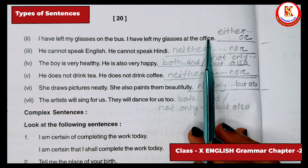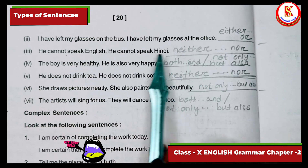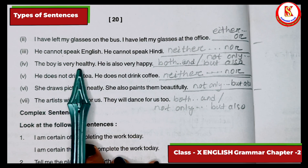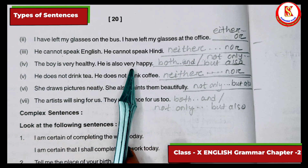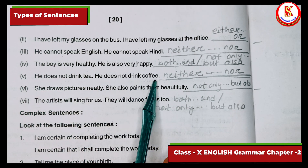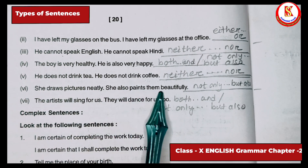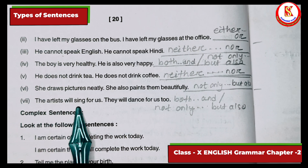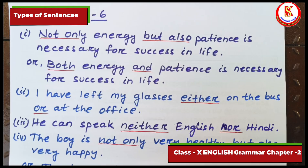'I have left my glasses on the bus' / 'I have left my glasses at the office' — 'I have left my glasses either on the bus or at the office.' 'He cannot speak English, he cannot speak Hindi' — 'He can speak neither English nor Hindi.' 'The boy is very healthy and also very happy' — 'The boy is both very healthy and very happy.' 'She not only draws pictures neatly but also paints them beautifully.' 'The artist will both sing for us and dance for us,' or 'not only sing but also dance for us.'